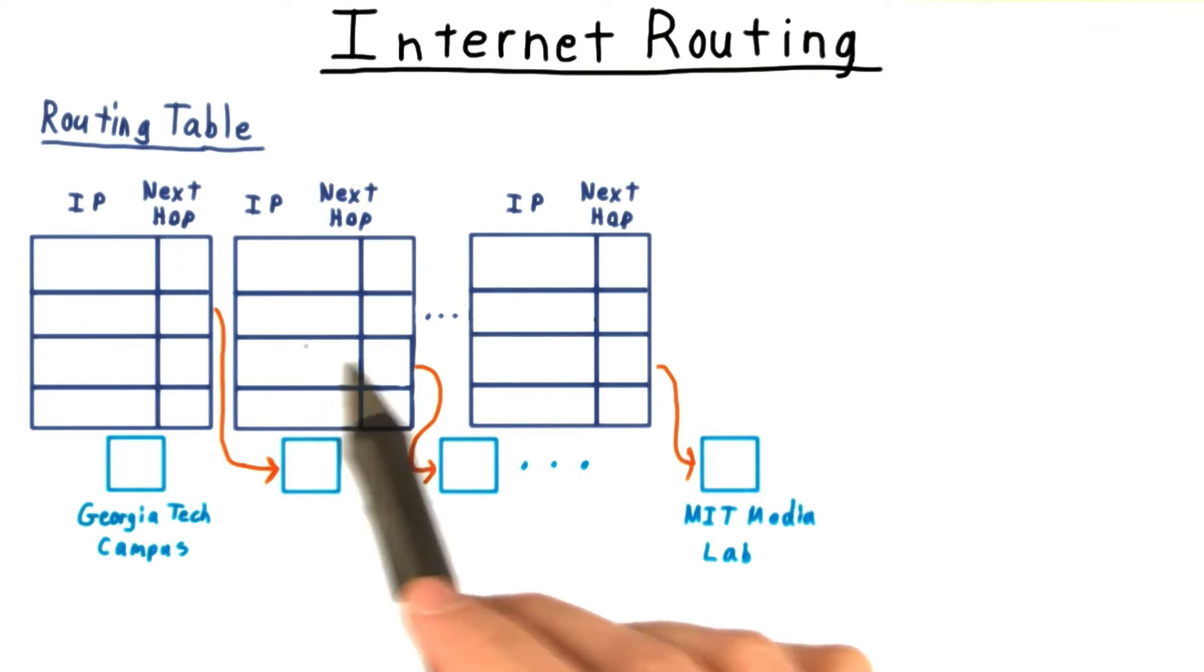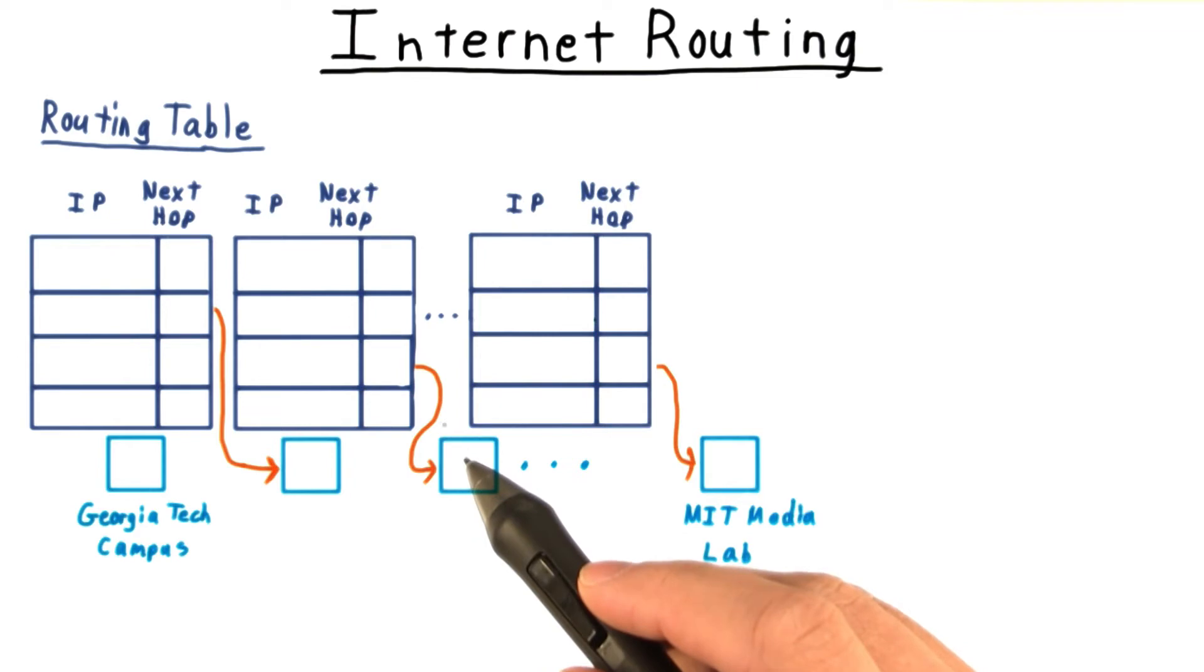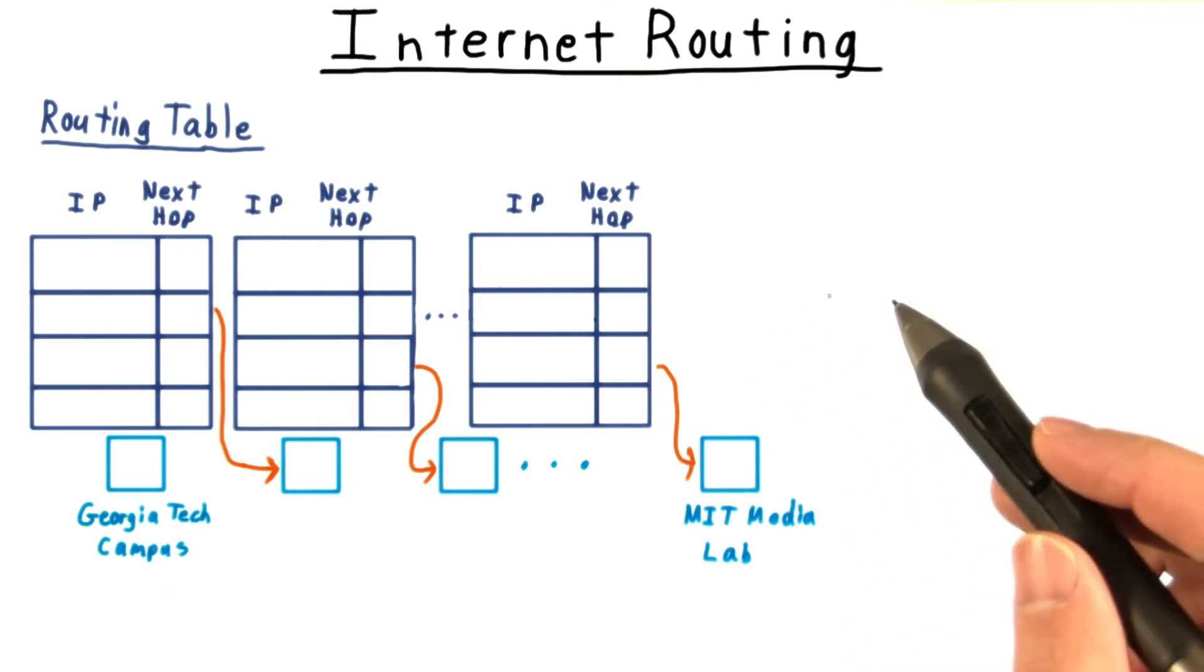Every node in the internet should have a different routing table. There is much that is interesting in the shortest path like algorithms used to figure out what the next hop should be, and also in the implementation of the routing table. Should it be a hash table, a trie, etc.